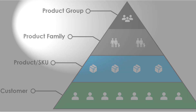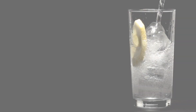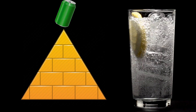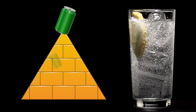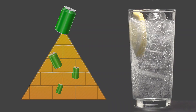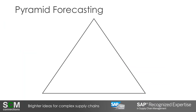For the demonstration today, I'm going to walk you through an example of a soft drinks manufacturer that produces different types of soft drinks, show you how they begin with a forecast at the top of their product hierarchy. From a process overview perspective, I'll start at the top of the pyramid, with the product group level being the highest point in my forecasting hierarchy.